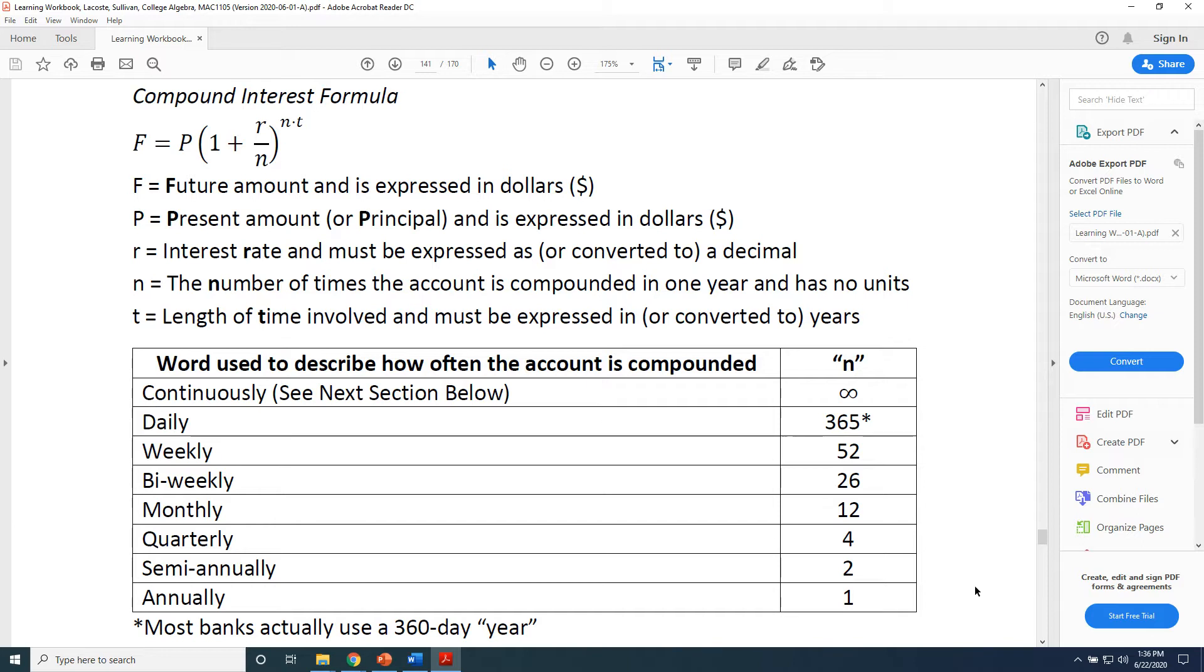r is the interest rate and must be expressed as or converted to a decimal when used in the formula. n is the number of times the account is compounded in one year and has no units. t is the length of time involved and must be expressed in or converted to years.